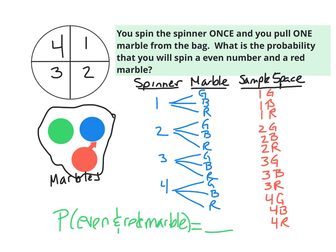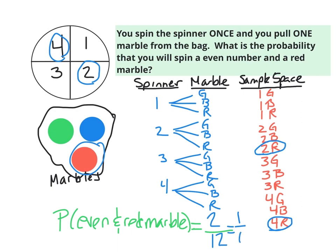Same problem, different probability: what's the probability that you spin an even number and pull a red marble? Spinning an even number means looking for two or four. I find two-red and four-red — two outcomes that are an even number and a red marble out of twelve total. That simplifies to one out of six.